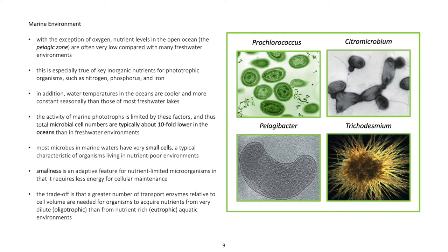The activity of marine phototrophs is limited by these factors, and thus total microbial cell numbers are typically about ten-fold lower in the oceans than in freshwater environments. Most microbes in marine waters have very small cells, a typical characteristic of organisms living in nutrient-poor environments. Smallness is an adaptive feature for nutrient-limited microorganisms in that it requires less energy for cellular maintenance. The trade-off is that a greater number of transport enzymes relative to cell volume are needed to acquire nutrients from very dilute oligotrophic or nutrient-rich eutrophic aquatic environments.